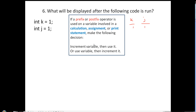Okay, now we're going to deal with number 6 on the Chapter 6 Review 1 assignment. As we look at this, we are establishing or declaring K to be 1 and J to be 1 in these first two lines.